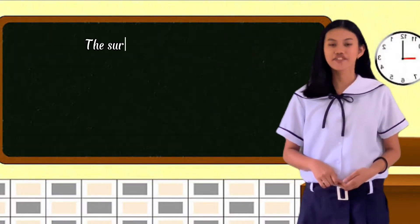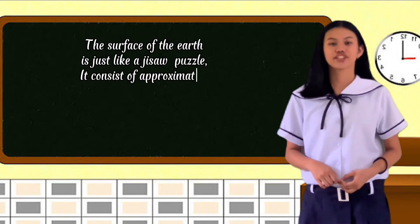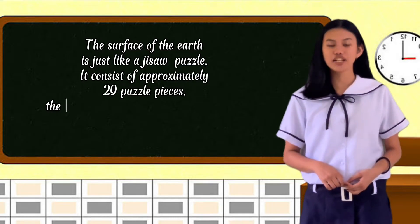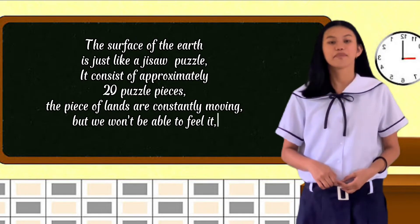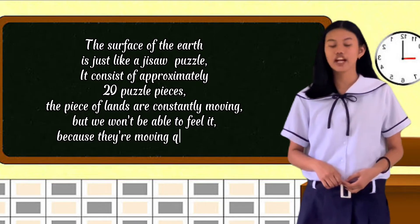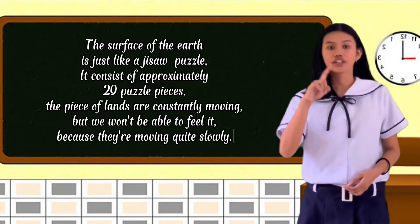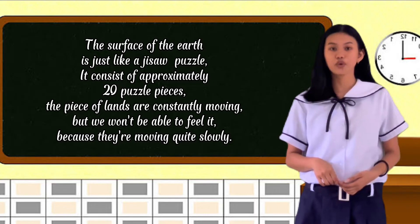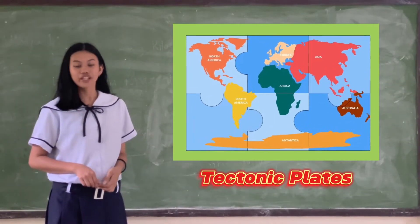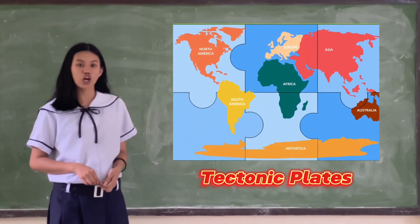The surface of the earth is just like a jigsaw puzzle. It consists of approximately 20 puzzle pieces. The pieces of land are constantly moving, but we aren't able to feel it because they're moving quite slowly. Scientifically, we call these land pieces tectonic plates.